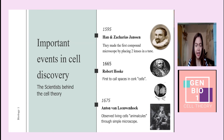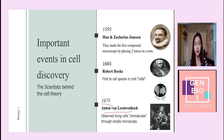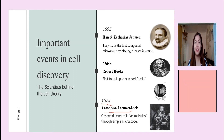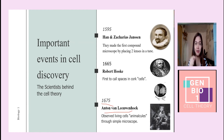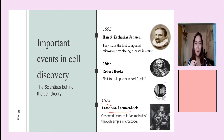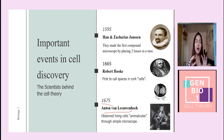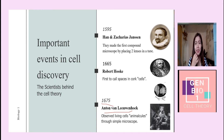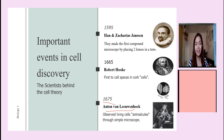Following that, Anton van Leeuwenhoek made his own microscope and observed living cells. He collected a sample of rainwater, placed it on a slide, and observed it under the microscope. He saw tiny organisms moving around, which he didn't recognize, so he called them 'animalcules.' Today we know these as bacteria or protists. Because of this discovery, he was called the father of microbiology.